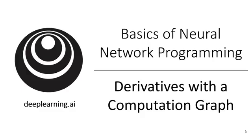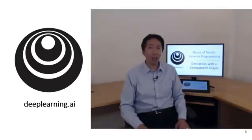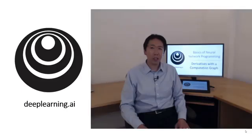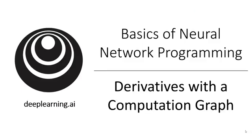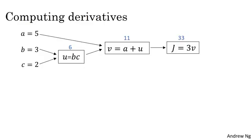In the last video, we worked through an example of using a computation graph to compute the function j. Now let's take a cleaned up version of that computation graph and show how you can use it to figure out derivative calculations for that function j. So here's our computation graph.